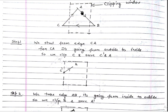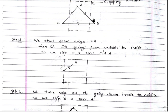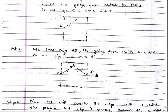Next, step two: we go from edge A to B. In this case, the edge is going from inside to outside — one point lies inside, one point lies outside. So we clip this part and what we save is B dash. Make sure you don't write it as A dash — it is B dash.